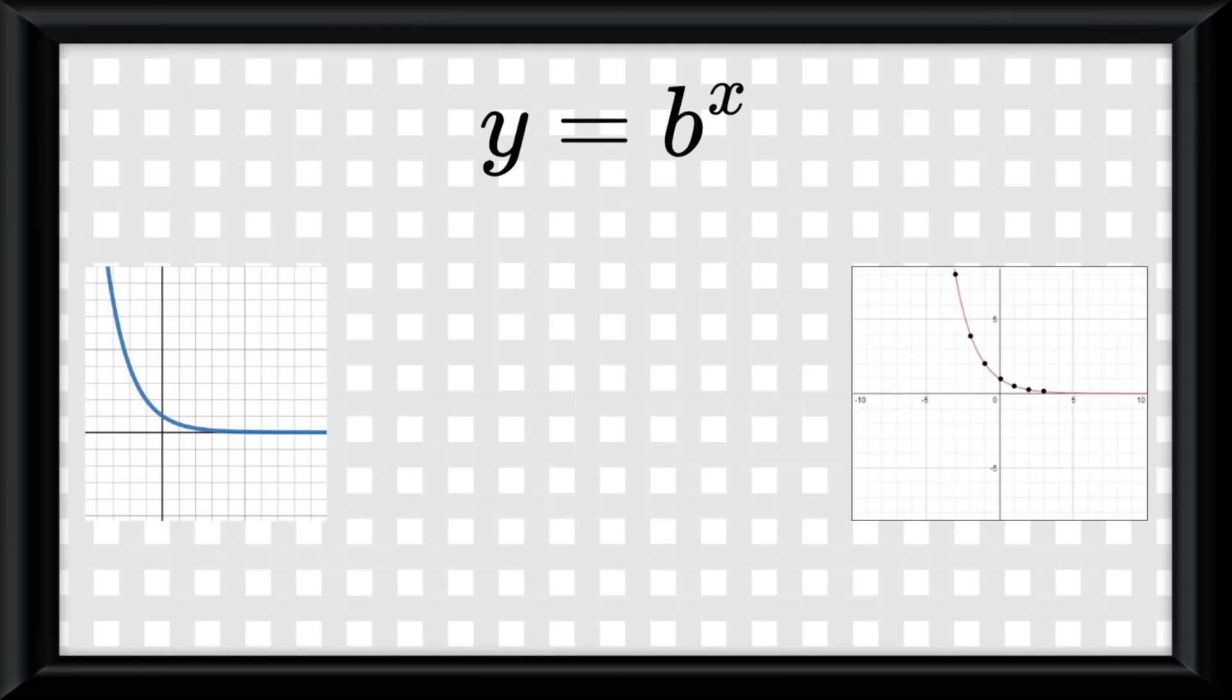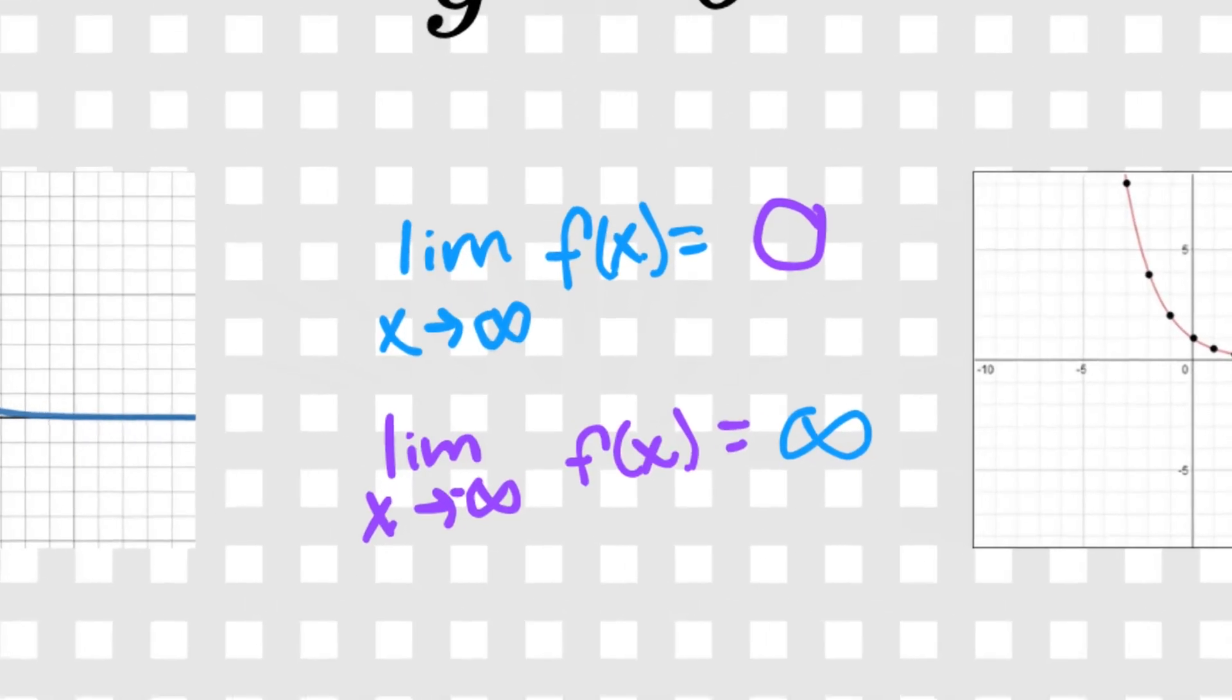The end behavior of any parent exponential decay functions would simply be swapped from the growths. But where the horizontal asymptotes are, and what the end behavior is, are all impacted by the transformations of a function, which is an issue for next topic.